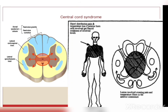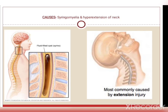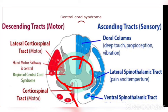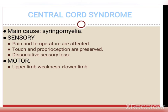Causes of central cord syndrome include syringomyelia (fluid-filled cyst formation in the spinal cord) and hyperextension injury of the neck. The changes include sensory loss of pain, temperature, touch and pressure (dissociative sensory loss), and motor loss — upper limb weakness. Posterior column syndrome (Tabes dorsalis) occurs due to neurosyphilis or diabetes mellitus, 10 to 20 years after infection. The posterior white column of the spinal cord is damaged, leading to loss of pain, vibration and proprioceptive sensation in the lower and upper limbs.